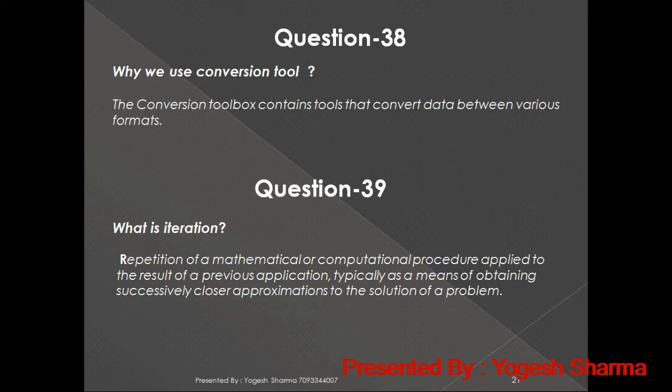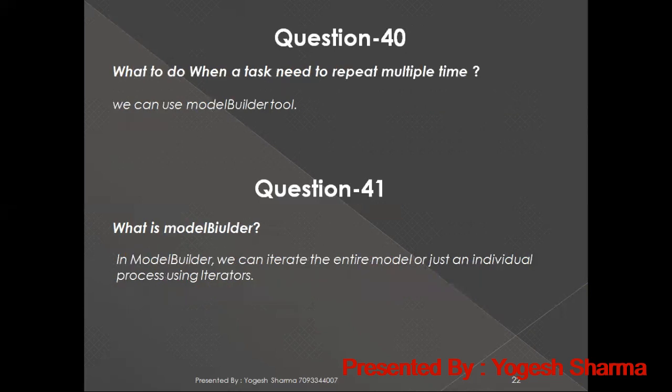What is iteration? Iteration is the repetition of a mathematical or computational procedure applied to the result of a previous application, typically as a means of obtaining successively closer approximations to the solution of a problem. In simpler terms, iteration means performing the same operation again and again using the previous value. What do you do when a task needs to repeat multiple times? We can use Model Builder in ArcGIS. In Model Builder, we can iterate the entire model or just an individual process using iterators.